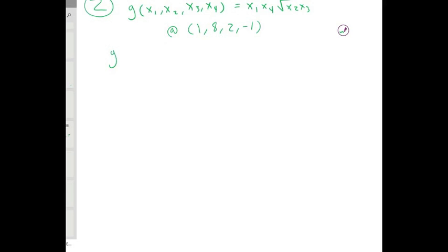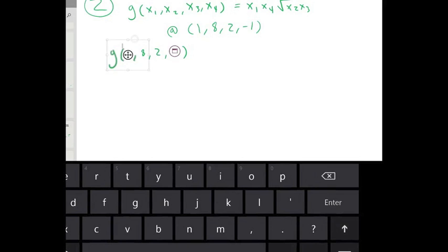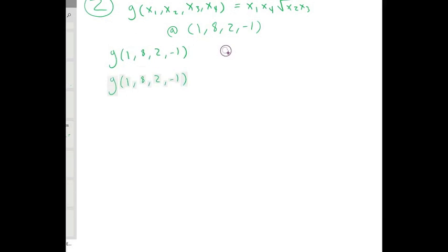We're going to find g of 1,8,2, negative 1, and we know that this equals x1, x2, x3, x4. So x1 is going to be 1, x2 is going to be 8, x3 is going to be 2, and x4 is going to be negative 1.